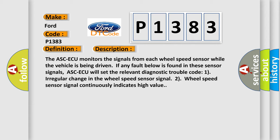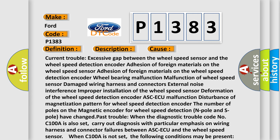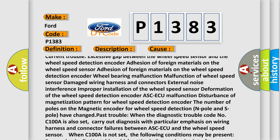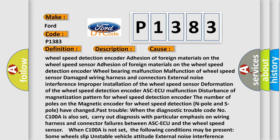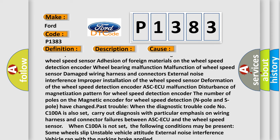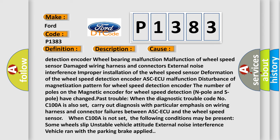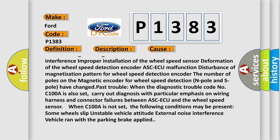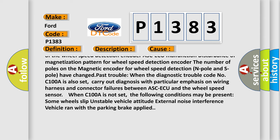This diagnostic error occurs most often in these cases: Current trouble: excessive gap between the wheel speed sensor and the wheel speed detection encoder, adhesion of foreign materials on the wheel speed sensor, adhesion of foreign materials on the wheel speed detection encoder, wheel bearing malfunction, malfunction of wheel speed sensor, damaged wiring harness and connectors, external noise interference, improper installation of the wheel speed sensor, deformation of the wheel speed detection encoder, ASC-ECU malfunction, disturbance of magnetization pattern for wheel speed detection encoder. The number of poles on the magnetic encoder for wheel speed detection (N pole and S pole) have changed.